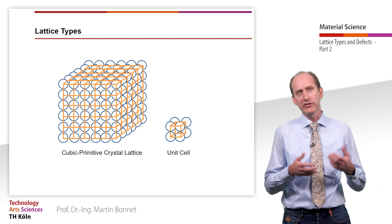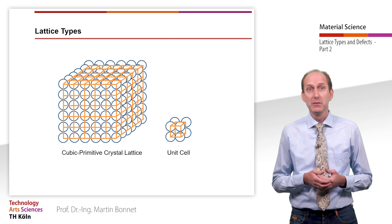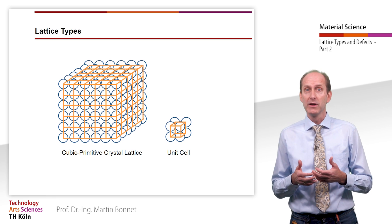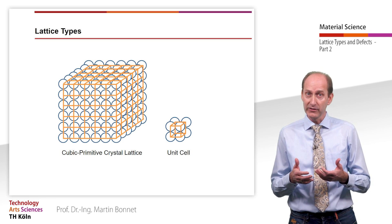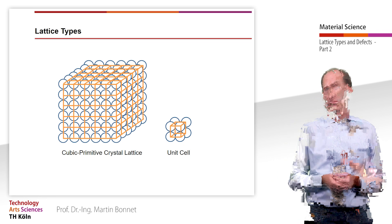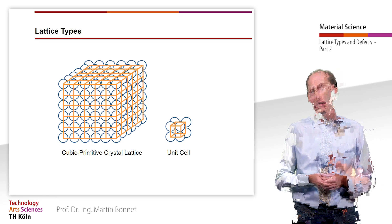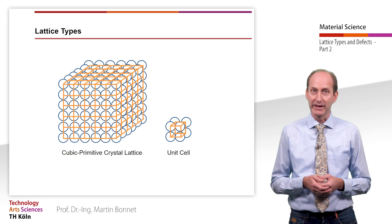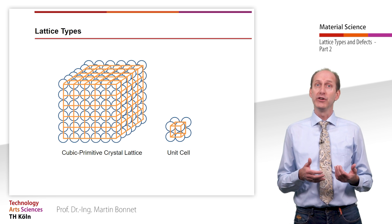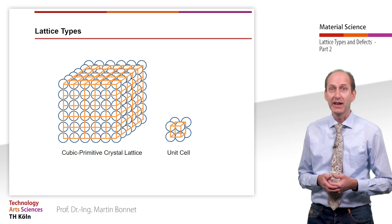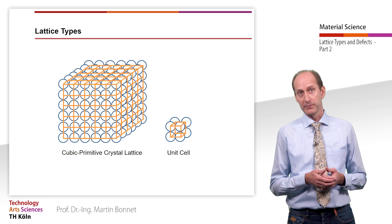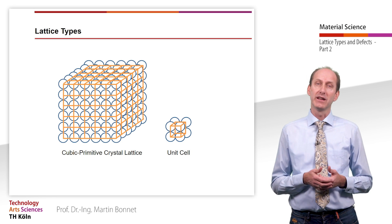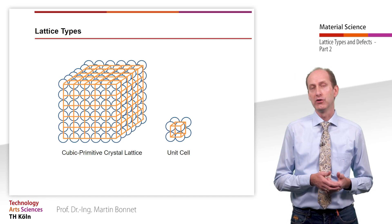The crystalline structure is characterized by the shape of the smallest repeated unit of this lattice, the so-called unit cell. Here you can see a cubic primitive crystal lattice, which we already learned about in the case of table salt. Here, one atom is located at each corner of a cube.